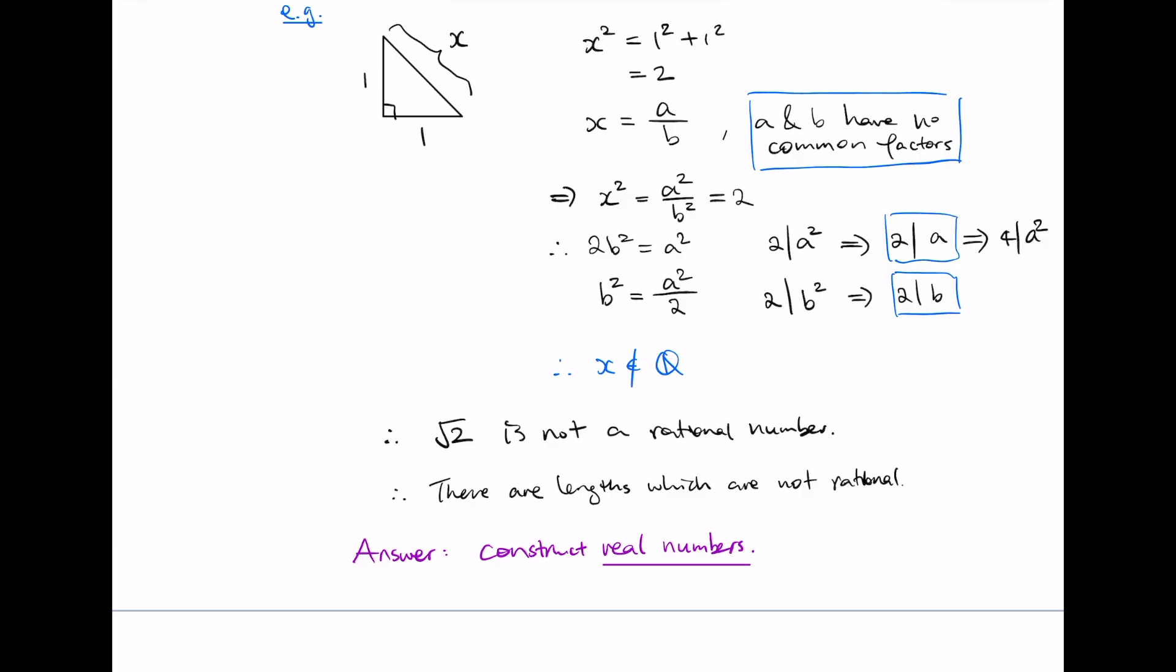Now, to construct the real numbers from the rational numbers actually requires an abstract process. So in fact, it wasn't done until the 1800s by people like Dedekind, even though the realization that the square root of 2 is not rational goes way back to the ancient Greeks.